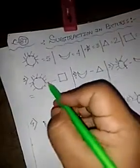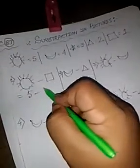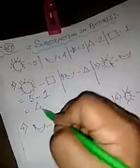Sun minus square, that is sun equals to 5, right 5. Square equals to 1, so 5 minus 1 equals to 4.